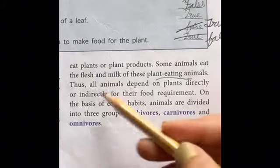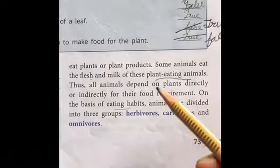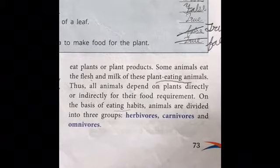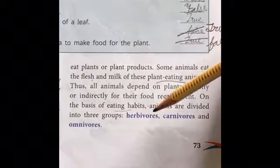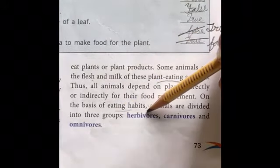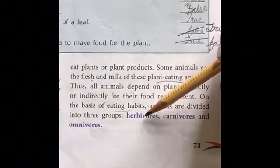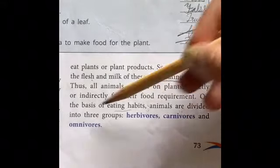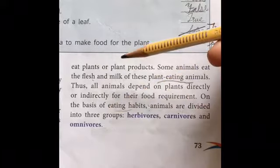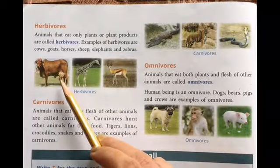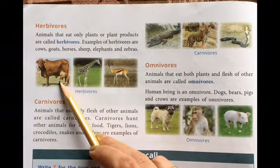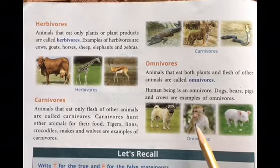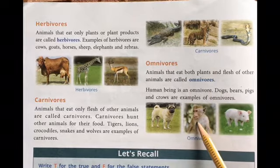Some animals eat other animals, and some eat plants. Depending on these eating habits, we divide them into categories: herbivores, carnivores, and omnivores. Herbivores eat plants — for example, cow, giraffe, and deer. Carnivores eat animals — like tiger, lion, alligator, and snake. Omnivores eat both plants and animals — like dog, monkey, and pig.